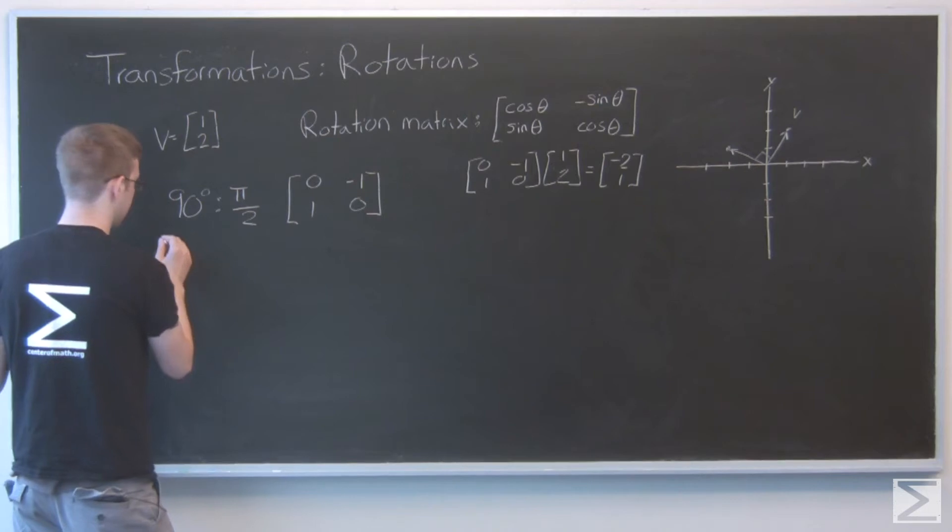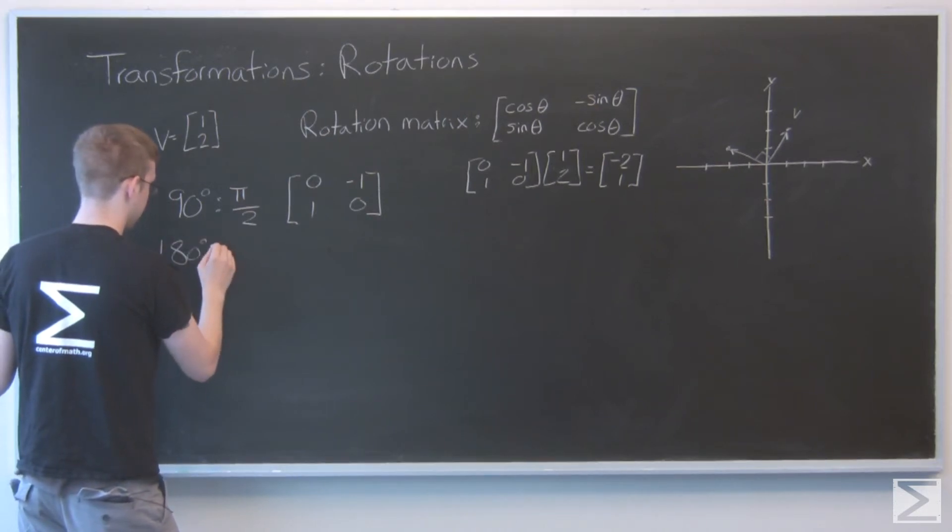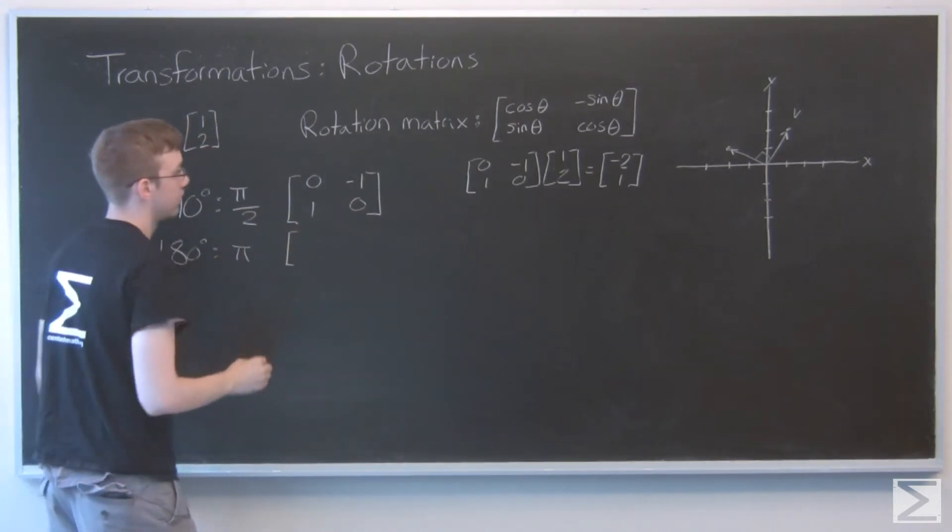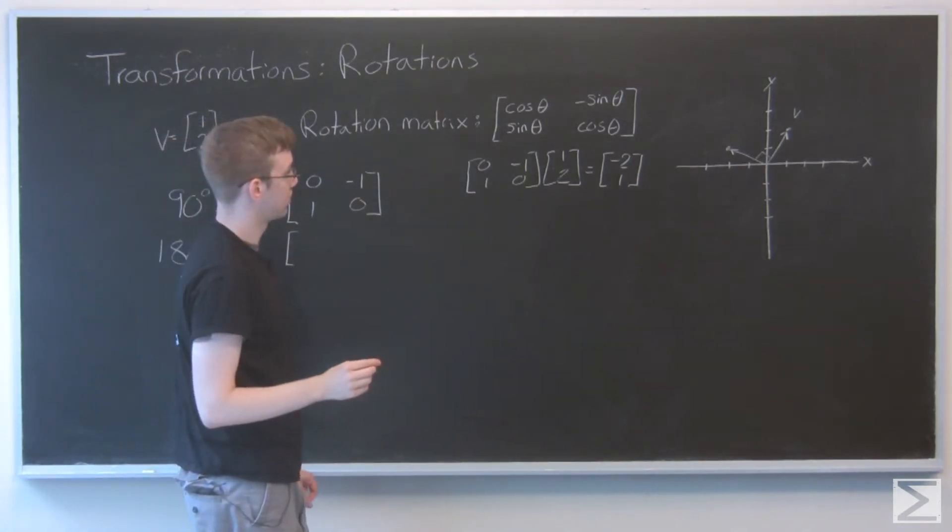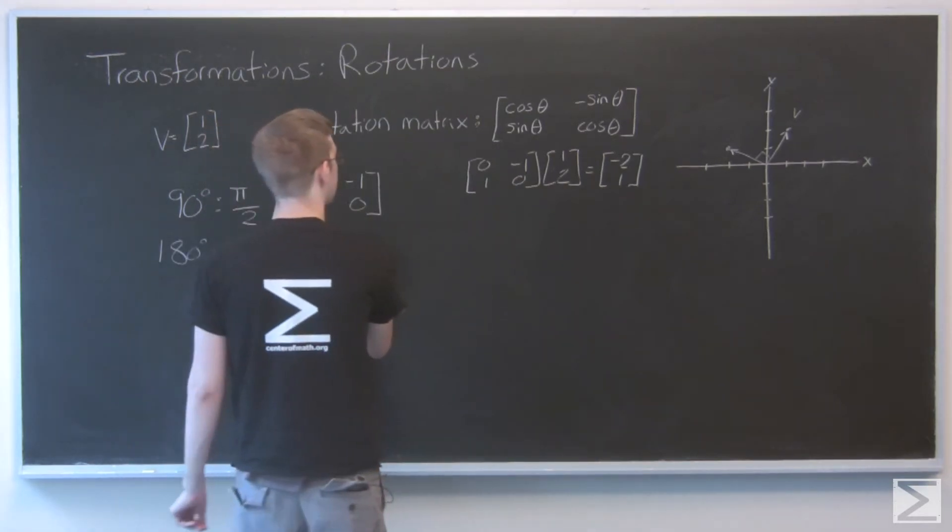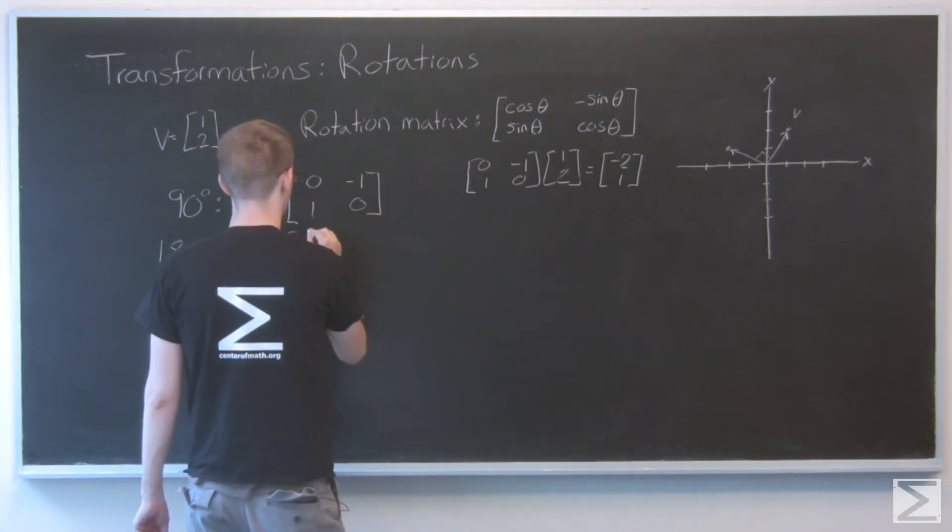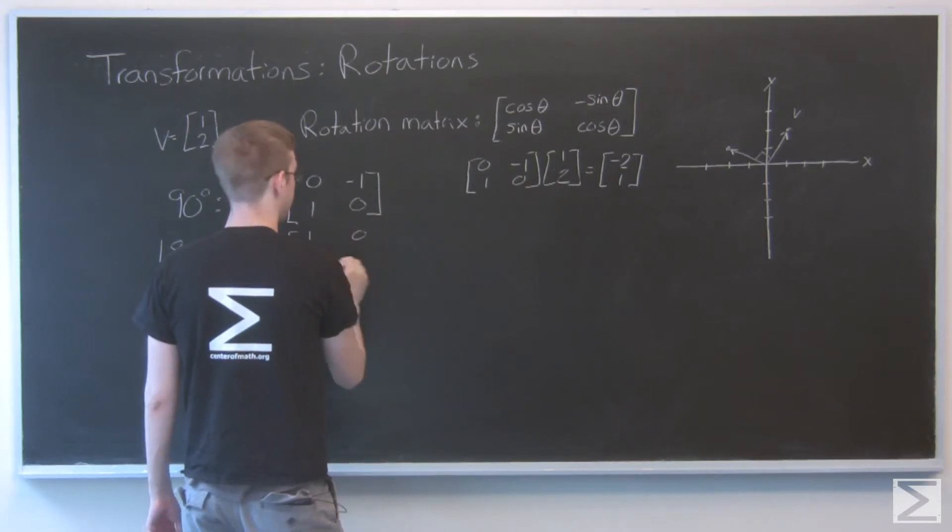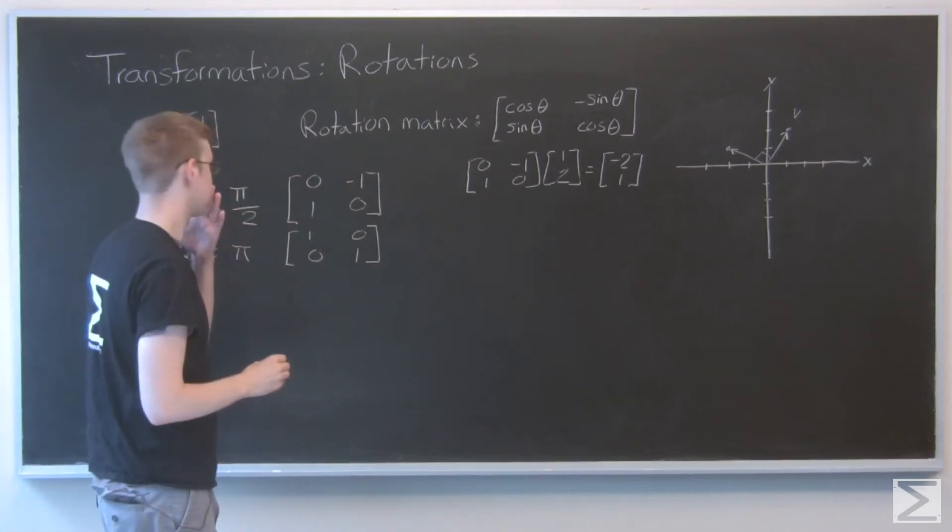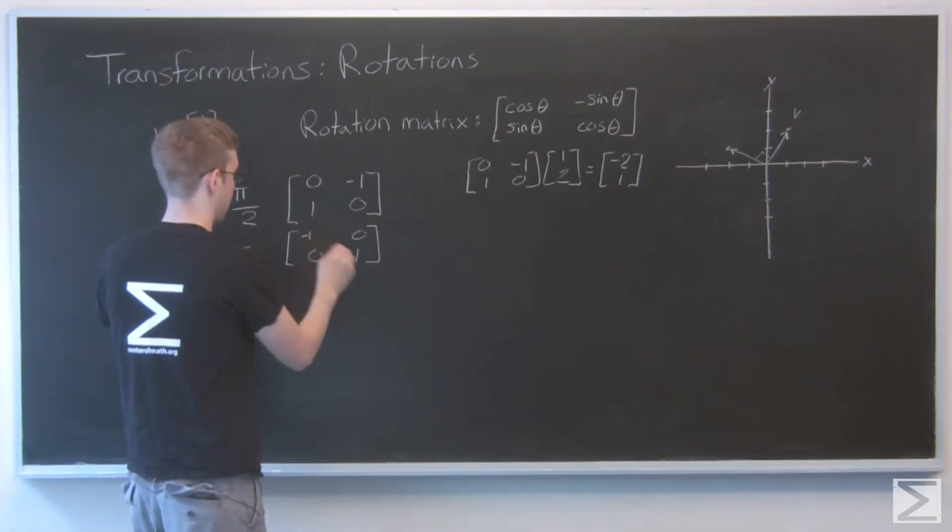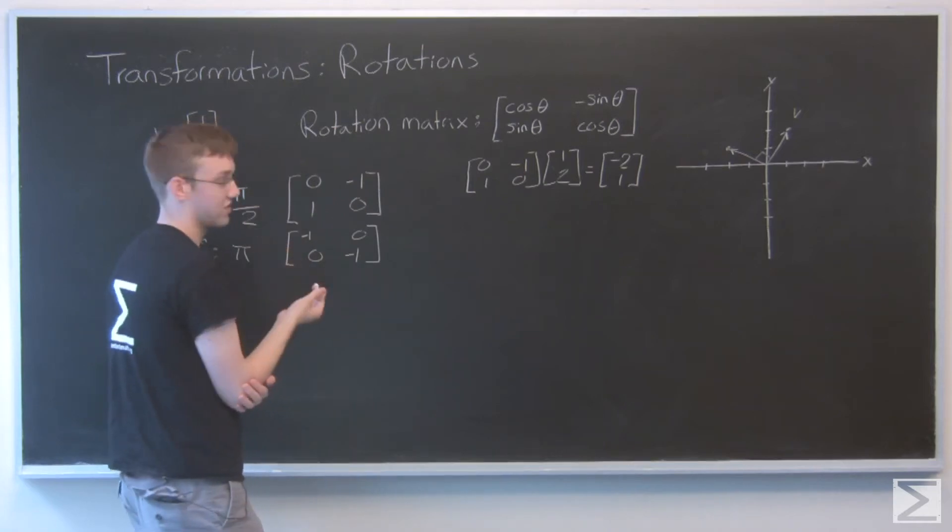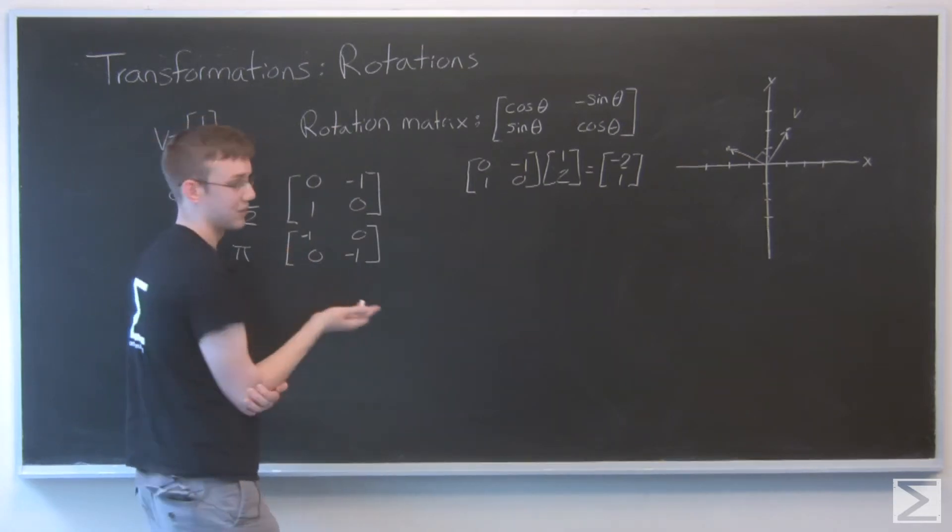So let's try 180 degrees. That's the same as pi. So cosine of pi, I know my trig, that's negative 1. Sine of pi is 0. And cosine again is negative 1. So that's just the identity matrix multiplied by negative 1.